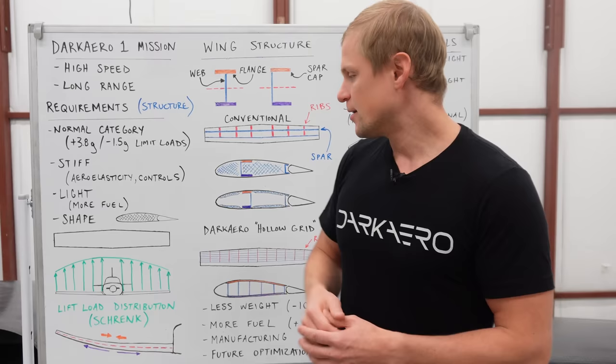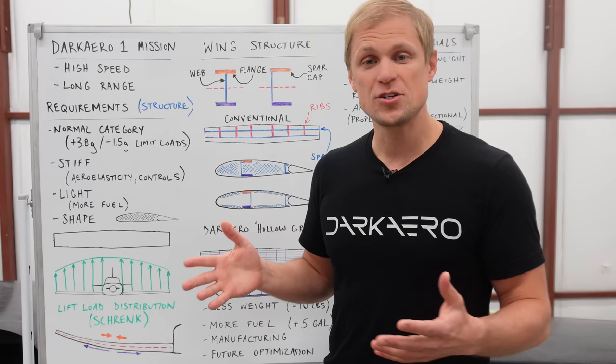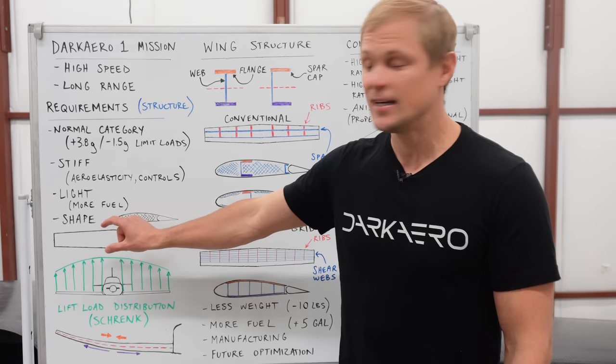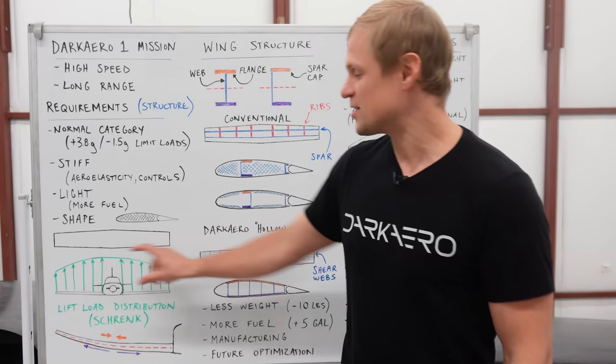There are a couple different ways we can approximate the lift load distribution on the wing. A popular method is called the Schrenk approximation, and that basically takes an elliptical lift distribution and averages it with your planform shape of your wing. So our wing has a linearly tapered planform shape, so we'd assign a linearly tapered lift distribution and average that with an elliptical distribution to get a lift load distribution that looks something like this.